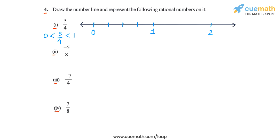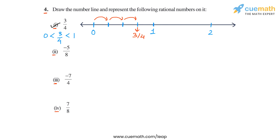So now you have divided the interval between 0 and 1 into four equal parts. Starting from 0, if we make three jumps of 1 by 4 to the right, this point here represents the rational number 3 by 4. So this is how you can represent 3 by 4 on the number line, and this completes part 1.